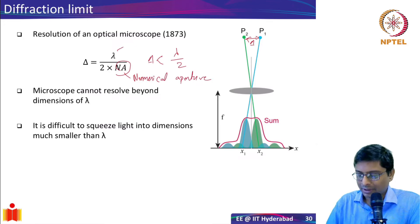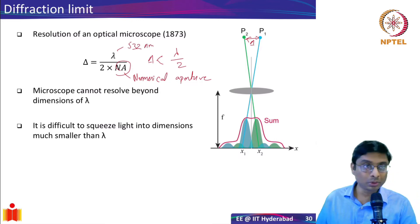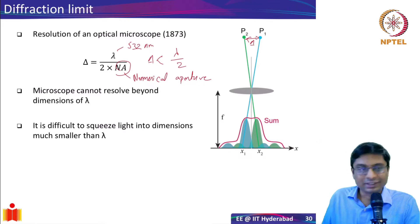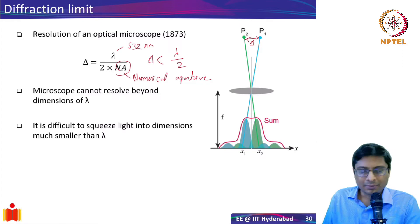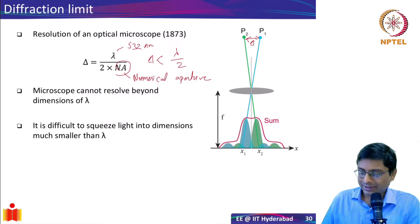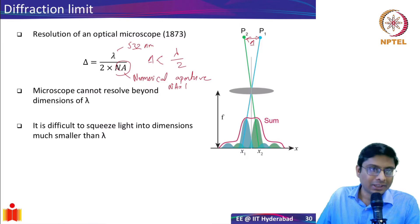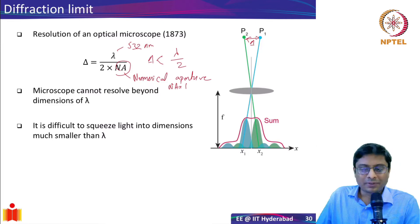Let's say lambda is 532 nanometers. I'm trying to see two closely spaced objects with a wavelength of 532 nanometers. If those objects are less than roughly lambda over 2 - assuming NA equals 1 - we cannot clearly resolve them. That is the observation Abbe made and quantified in terms of lambda.